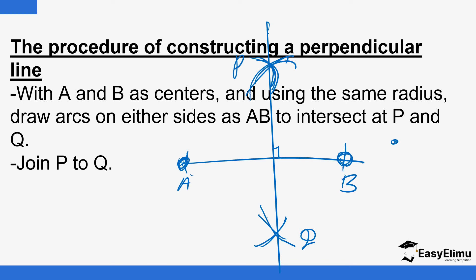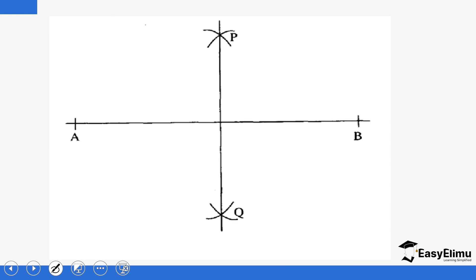With A and B as centers — starting with A, draw an arc up there and another arc down here, using a pair of compasses. Then shifting to point B, draw an arc here and another arc there, so the two arcs intersect the first arcs you had drawn. Where there is a point of intersection up here, call it P; where there is a point of intersection down here, call it Q. Join P to Q, and that line is the perpendicular bisector of this line. You can see this line is perpendicular to this.